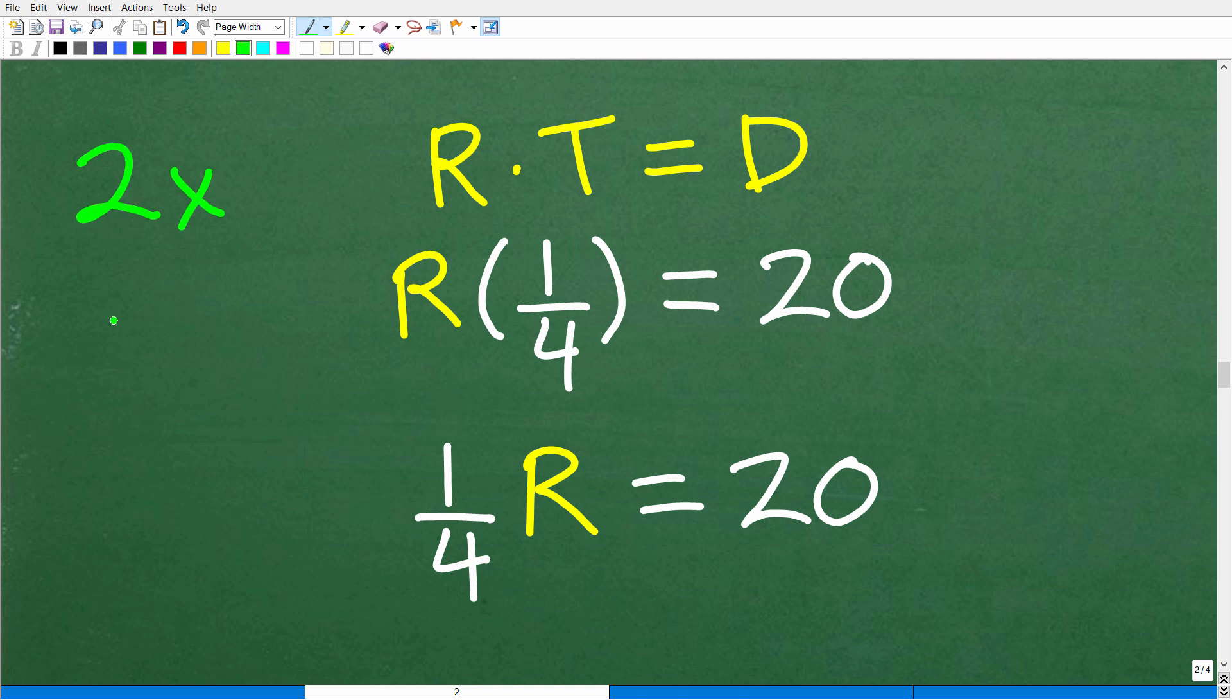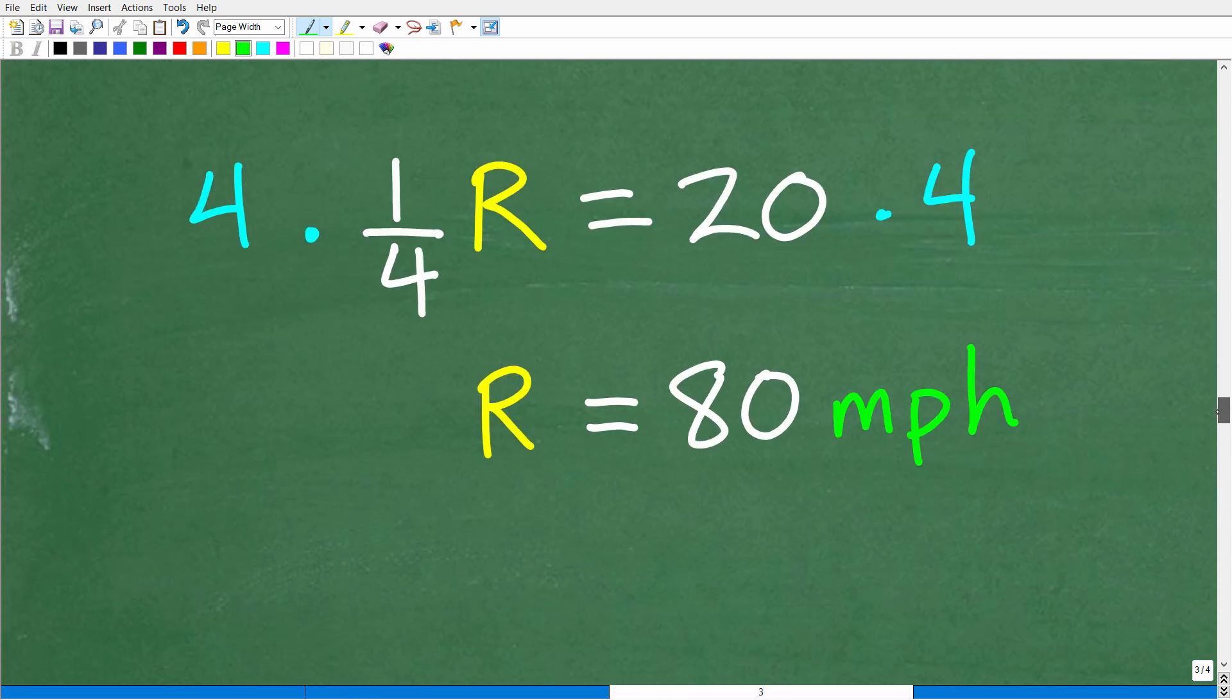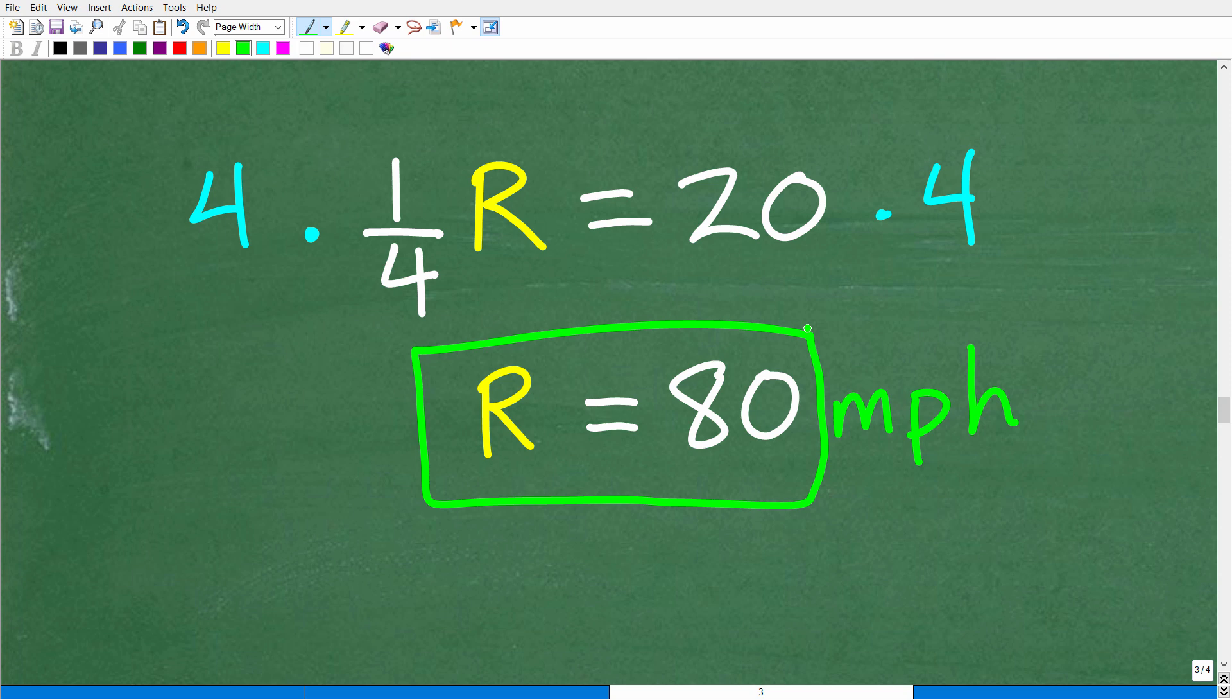Now in algebra, we don't write our variables something like this, two X, we don't write it as X two, right? So you can just kind of flip these. So we'll put the coefficient, the one fourth in front of the R and now we need to solve this basic formula, which is super easy to solve. All right. So let's go and take a look at what we need to do. So we have one fourth R is equal to 20. So to solve for R, all we have to do is multiply both sides of the equation by four and we get R is equal to 80. But 80 what? Well, 80 miles per hour because 20 is miles and one fourth is in hours.